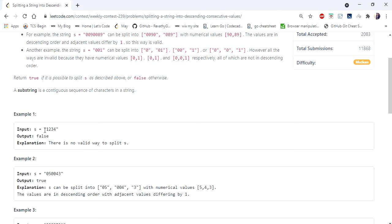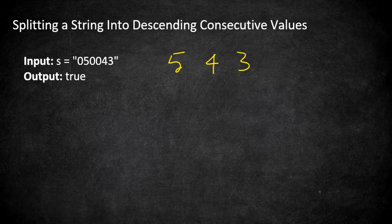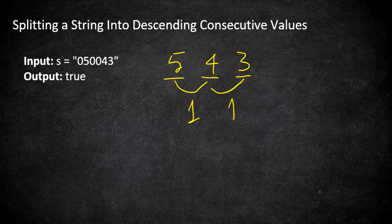The input given is a string which consists of only digits and we have to return true if we can possibly split the numbers in a consecutive descending order. Let's understand this with an example: the given string is 050043. If you ignore the leading zeros, the numbers you can form are 5, 4, and 3, which is a consecutive descending sequence where the difference between each value is 1 and in decreasing order. So this satisfies the condition and we return true.